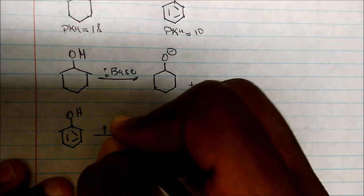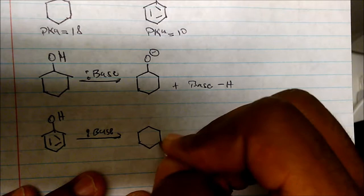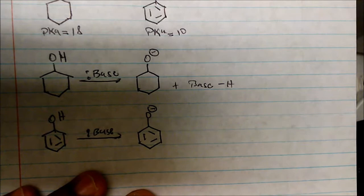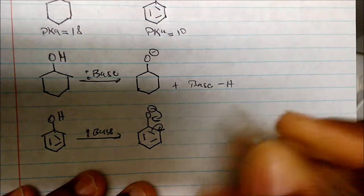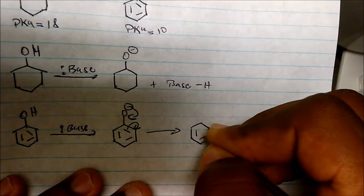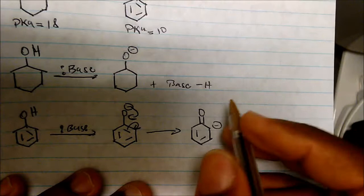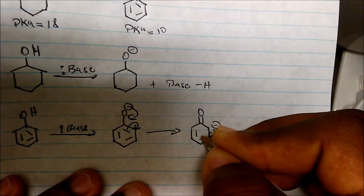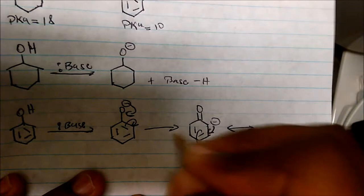Now if we take this phenol and deprotonate it with a strong base, we get an oxygen that's negatively charged — but we can actually draw resonance structures. We can flip electrons in, keep these electrons, and get a resonance-stabilized molecule. We can draw additional resonance structures with a double bond to oxygen and a negatively charged carbon, and keep going around the molecule.